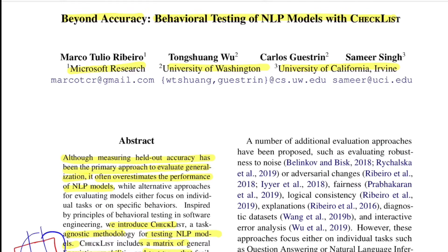I can see why this paper got selected as the best paper — the impact it creates in the evaluation space is really phenomenal. The idea is pretty simple, not something out of the blue, but impactful. Accuracy is useful on benchmarks, but it's clearly not sufficient when evaluating NLP models. Frameworks like Checklist are going to help us in the long run to improve our models, and it would be interesting to see how many newer papers use this metric as part of their evaluation.